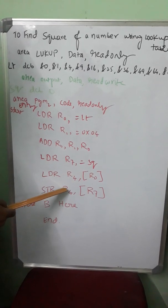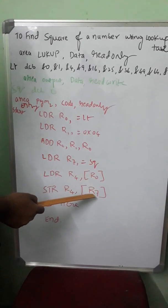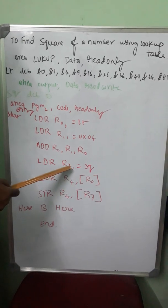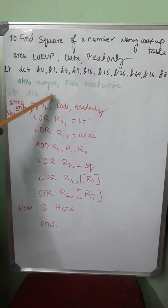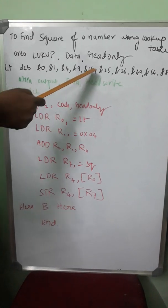R0 is pointing to LT plus 4 location where 16 exists. 16 comes to R4. And then from R4, I take it to the location pointed by R7. R7 here, I made it to point at SQ. That is where 0 is stored. So 0 will be replaced by 16.